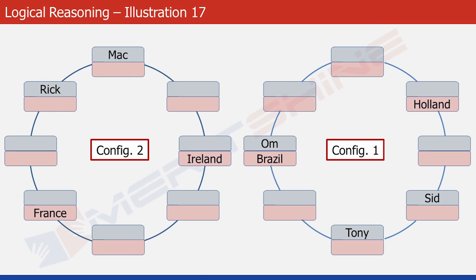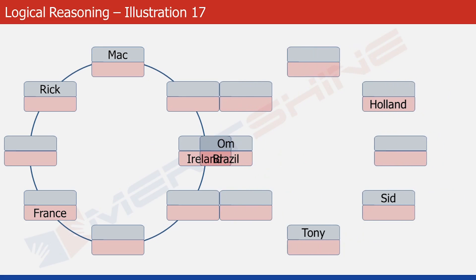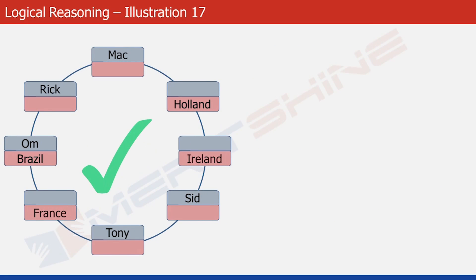Rotating to the last possibility — the 8th rotation of Configuration 2 — there is no obvious clash or constraint violation. Since the question must have a valid answer, this has to work. We merge the two configurations and the resulting structure looks fine. This is now a concrete arrangement based on all the statements seen so far, and it does not violate any of the conditions.